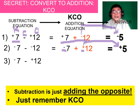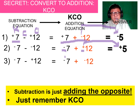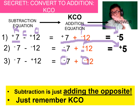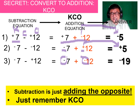How about this one? KCO — rewrite it as negative 7 plus negative 12. You're adding a negative and a negative. On the number line you're moving left, then more left — you end up at negative 19. Good job!